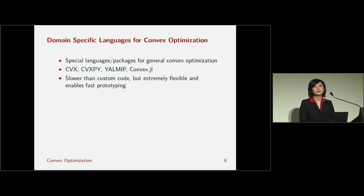These DSLs may be slower than custom code you write in Fortran or C. However, their advantage is that they're extremely flexible, which enables you to quickly prototype new models and methods on your data set.